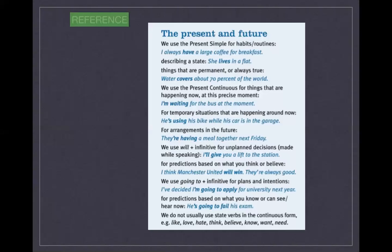In this unit we talked about the present and the future. We use the present simple for habits and routines: 'I always have a large coffee for breakfast.' We use the present simple for describing a state: 'She lives in a flat.' We use the present simple for things that are permanent or always true: 'Water covers about 70% of the world.'